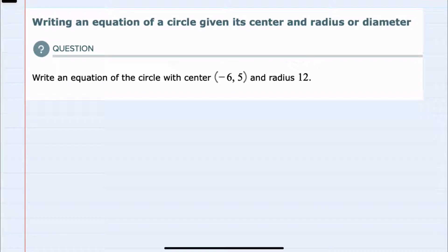For this example we're given the center and the radius. However, if we were given the diameter we could just take half of that value to find the radius.